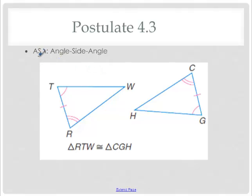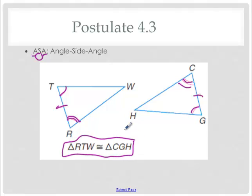The third one is angle, side, angle — same idea. We need two angles and a side in the middle. We have an angle and an angle; we have angle R congruent to angle C, and in between those two we have a congruent side. Remember, congruent statements go according to what's congruent: angle R is first, so C goes first; G is second, so T goes second; W and H are last.